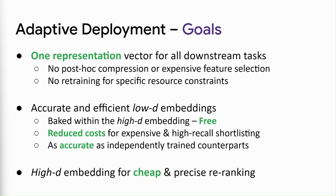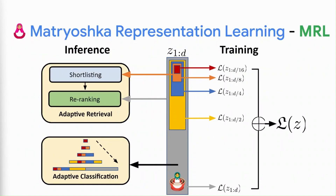Finally, we can use the high-dimensional embedding for cheap and precise ranking on the obtained shortlist. To achieve these goals, we propose Matryoshka Representation Learning, a new representation learning paradigm that solves the same learning task at multiple granularities, often log-d number for a d-dimensional representation.